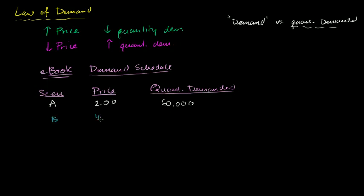Scenario B, I could raise the price by $2, so it's now $4. And then that kills off a lot of the demand. Now the quantity demanded goes down to 40,000 people downloading it. Then I could go to scenario C. If I raise by another $2, so now I'm at $6, now that lowers the quantity demanded to 30,000.